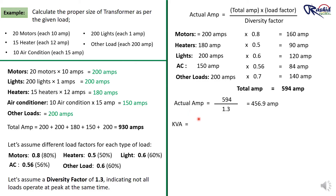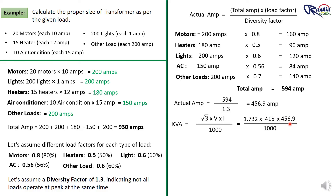Now we need to find the KVA rating. Using the formula KVA = (√3 × V × I) ÷ 1000, where √3 = 1.732, voltage = 415V, and current = 456.9A, we get: 1.732 × 415 × 456.9 ÷ 1000 = 328.42 KVA. So the total KVA rating of our loads is 328.42 KVA.